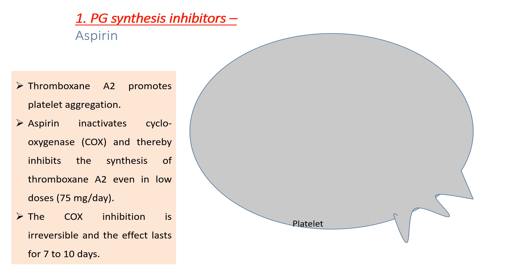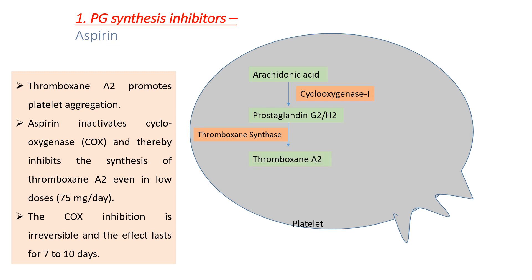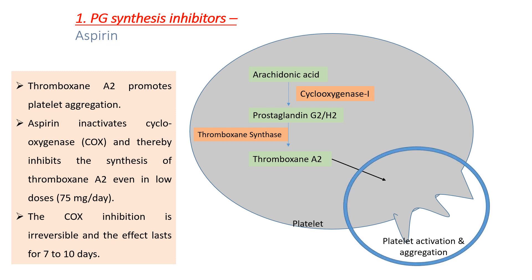The first class is PG synthesis inhibitors; the example is aspirin. In the platelet, arachidonic acid in the presence of cyclooxygenase-1 is converted into prostaglandin G2H2. This prostaglandin, in the presence of thromboxane synthase, is converted into thromboxane A2, which is involved in platelet activation and aggregation. Aspirin inactivates cyclooxygenase-1, thereby inhibiting the synthesis of thromboxane A2 and ultimately inhibiting platelet activation and aggregation. The COX inhibition is irreversible and the effect lasts for 7 to 10 days.